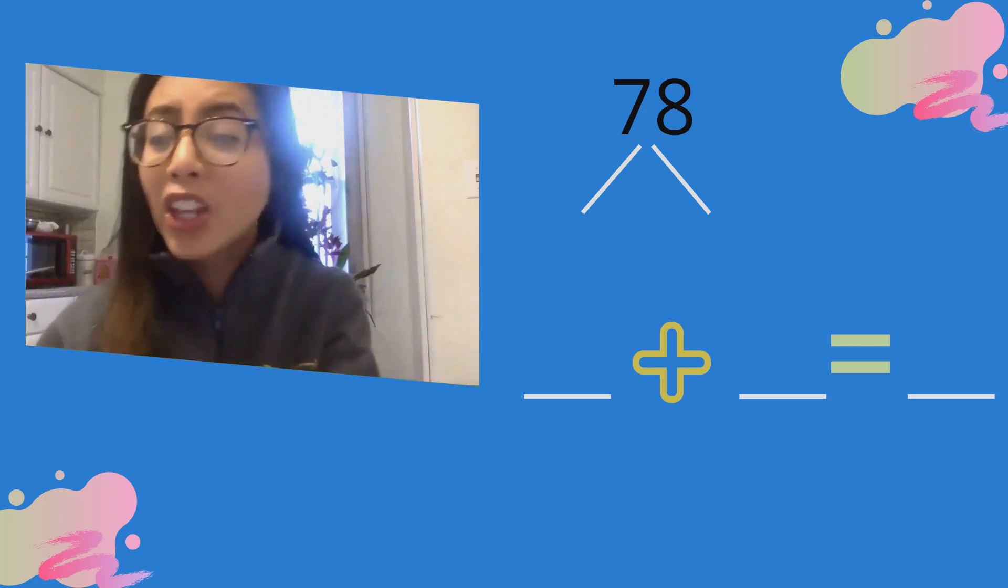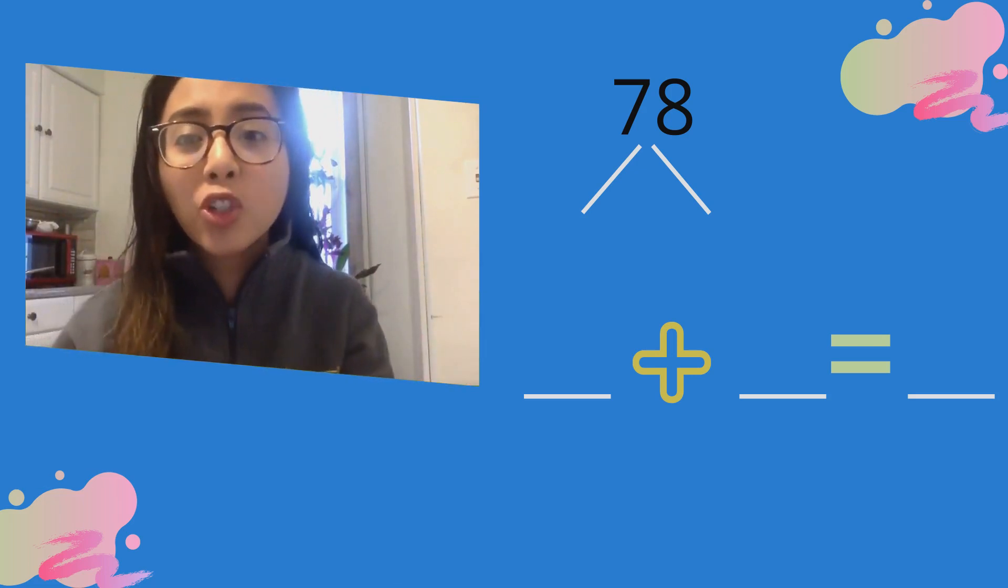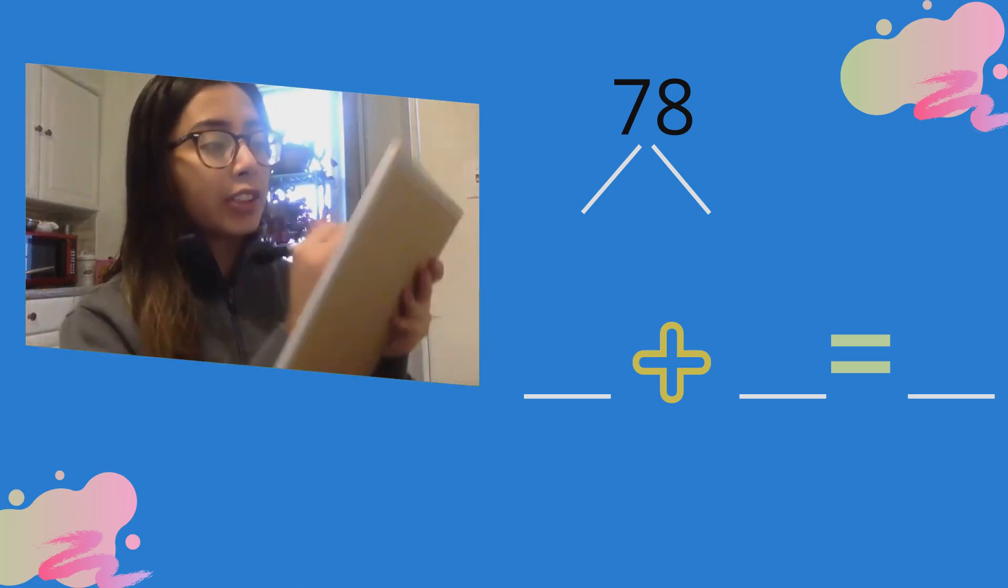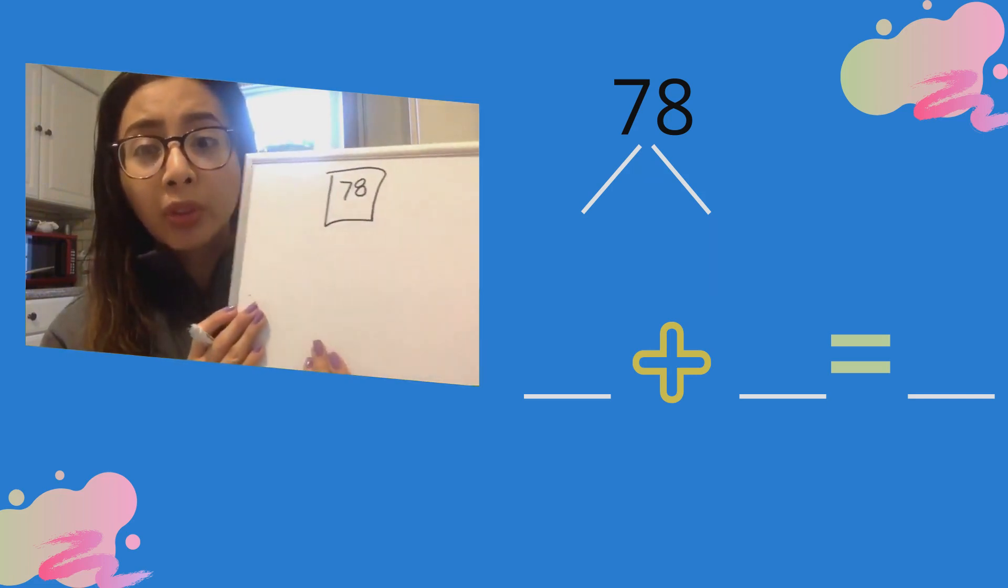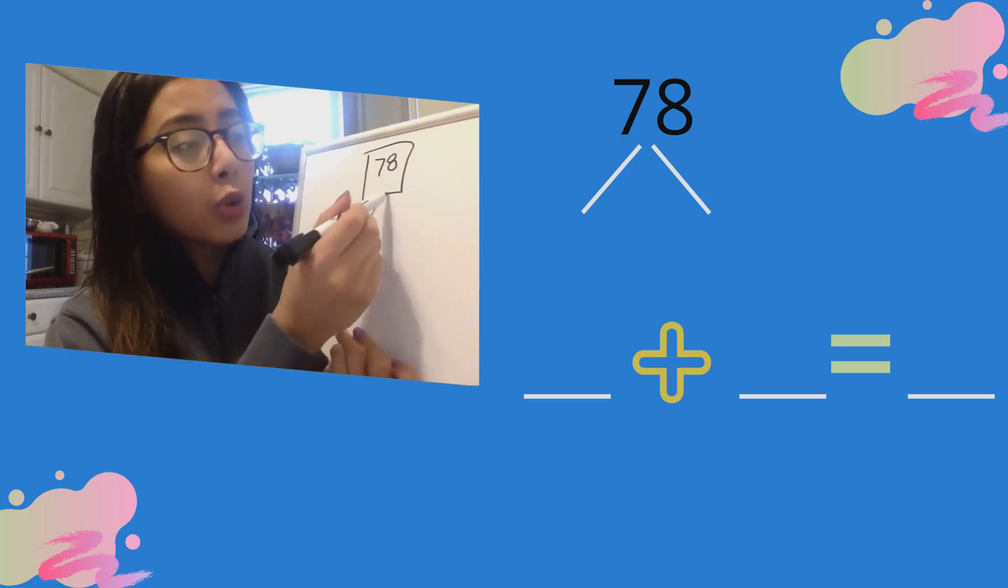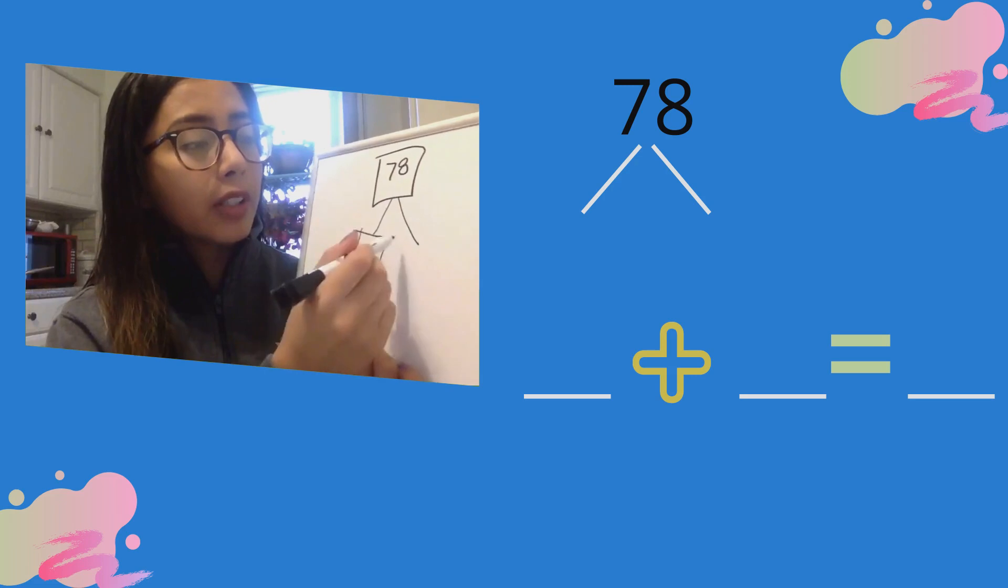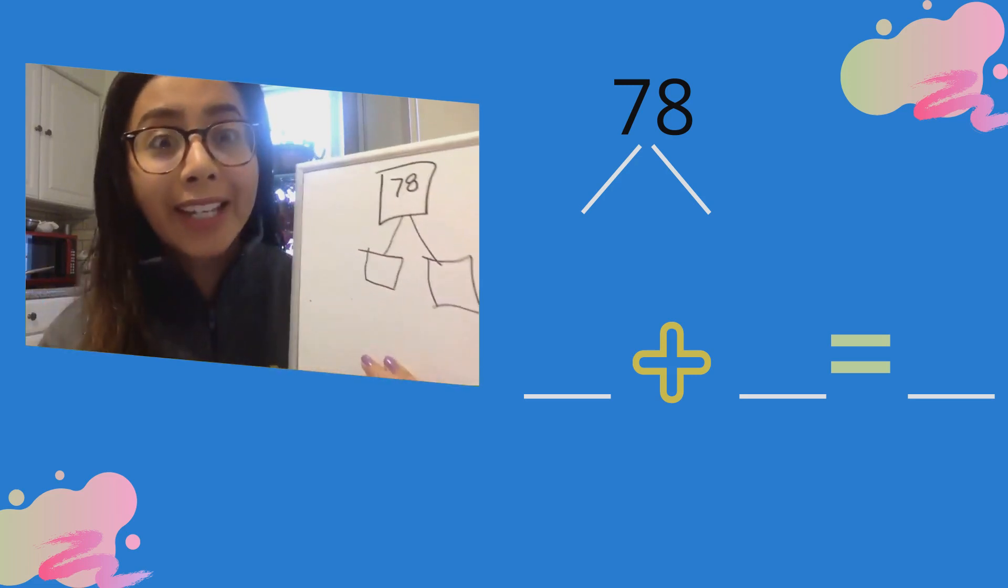Let's draw a number bond that shows the tens and ones. So 78 is our total and it can go at the top of our number bond. That's our total. And now I'm gonna have two parts for 78.